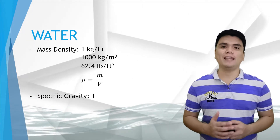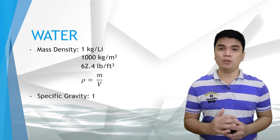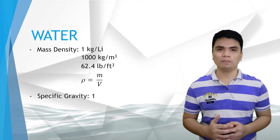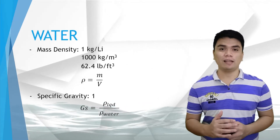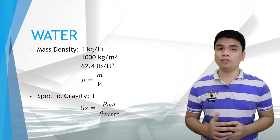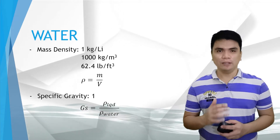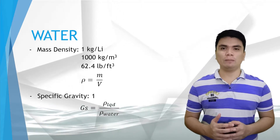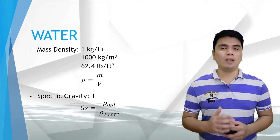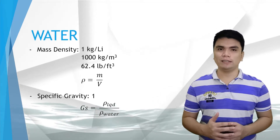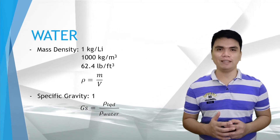When we say mass density, it is the weight of liquid per unit volume. While specific gravity is defined as the ratio of the density of a substance to the density of a standard liquid. Usually, we use water as the standard liquid in computing for the specific gravity.